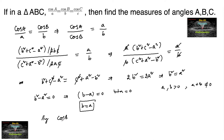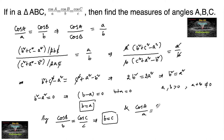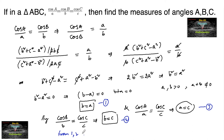Similarly, if we consider cos B upon B is equal to cos C upon C — just changing the angles to B and C — we get B is equal to C. And from cos A upon A is equal to cos C upon C, we can also say A is equal to C. So from these three results, we conclude A is equal to B is equal to C.